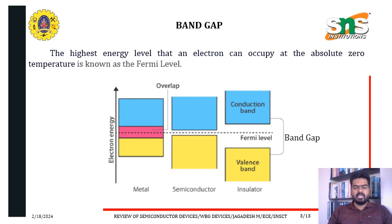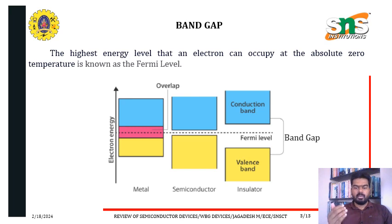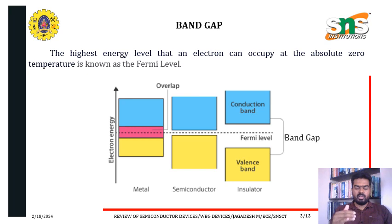The highest energy level that an electron can occupy at absolute zero temperature is known as the Fermi level. We have three types of material classification: metal, semiconductor, and insulator. In a metal, the conduction band and valence band overlap each other. In an insulator, there is a large band gap between them. In a semiconductor, the band gap is smaller than in an insulator but larger than in a metal. The Fermi level indicates the energy level of the electron.